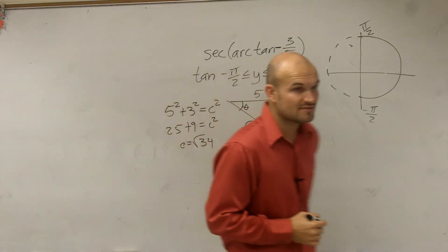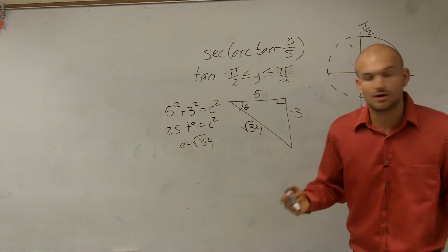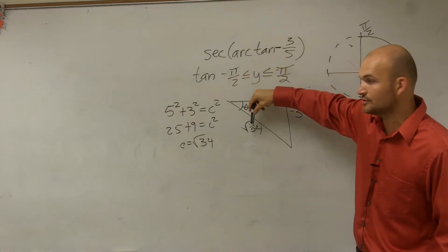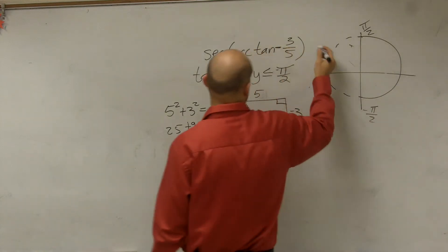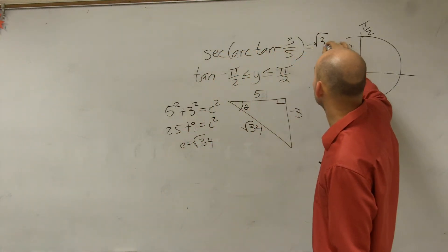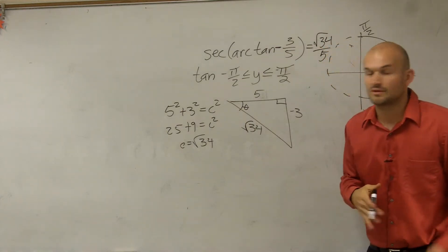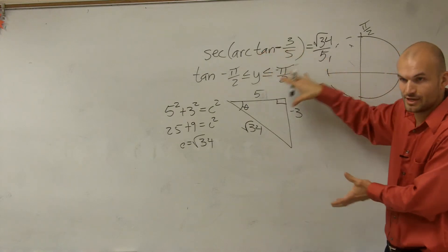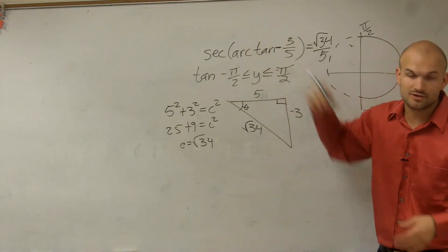All right? And then, to find the secant, remember the secant is the reciprocal of cosine. So if I have my cosine as adjacent over hypotenuse, the secant is going to be the hypotenuse over adjacent. So therefore, this final answer is going to be square root of 34 over 5. That's all you guys simply need to do is use your arctan to be able to create your triangle, make sure it's in the correct quadrant, and then you can evaluate.